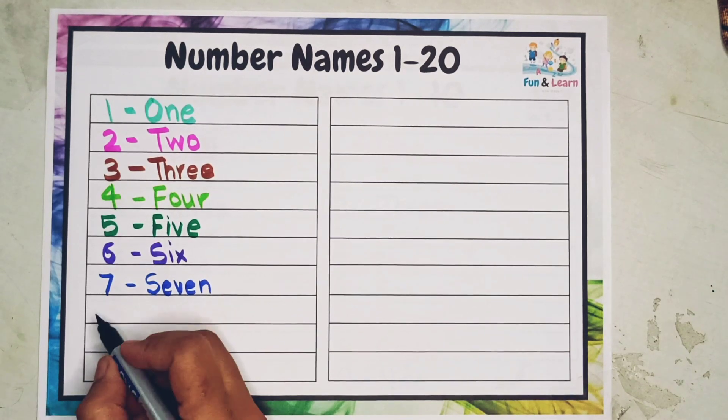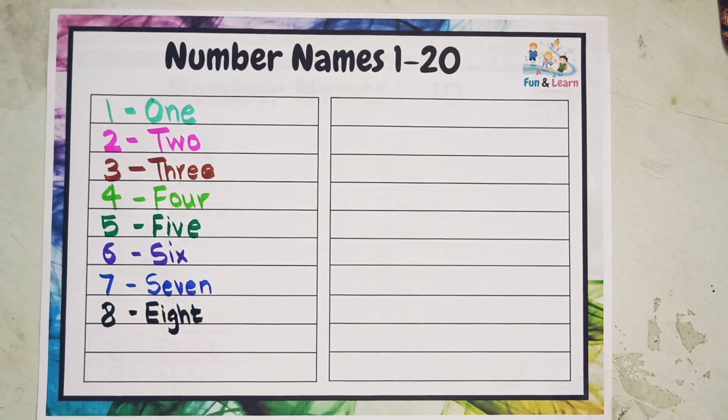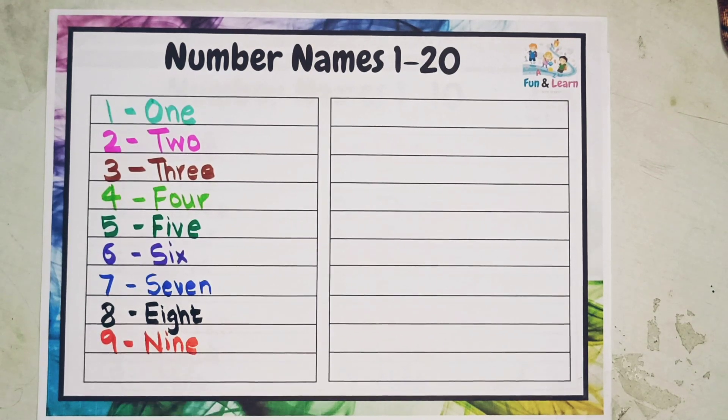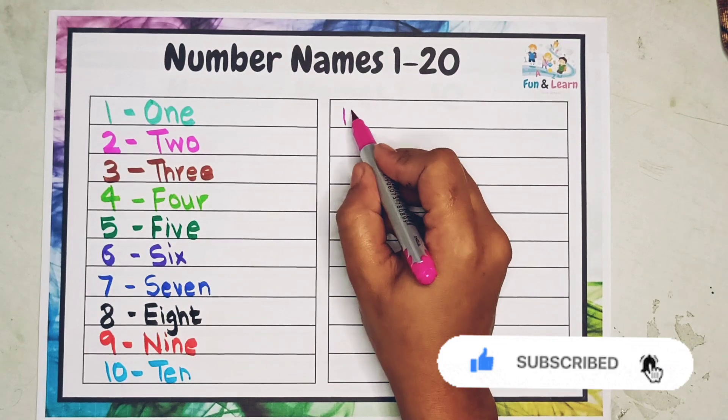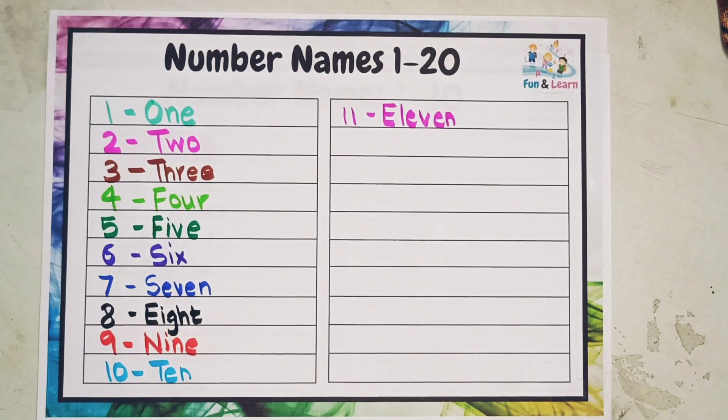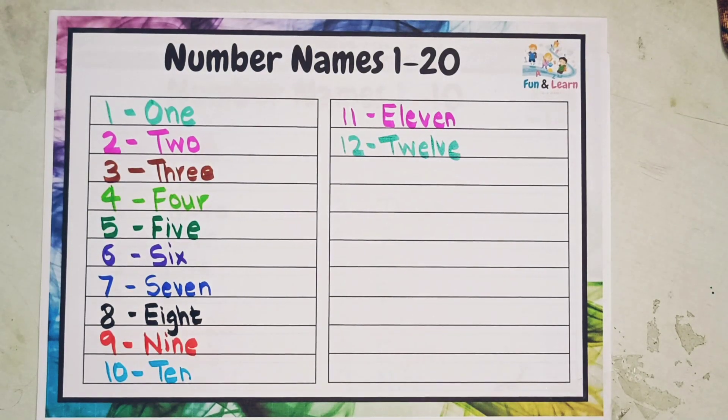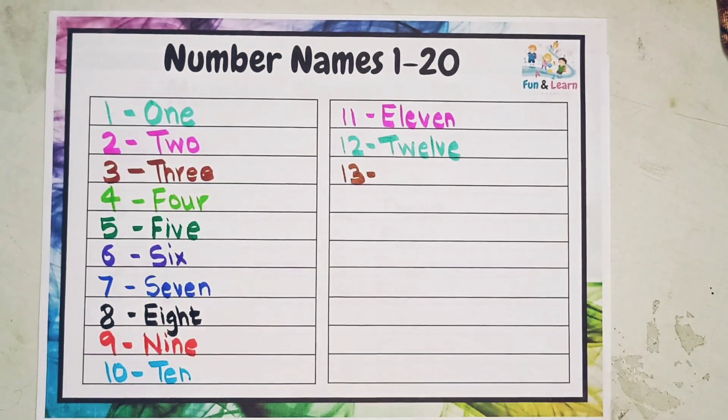8: E-I-G-H-T, eight. E-I-G-H-T, eight. 11: E-L-E-V-E-N, eleven. 12: T-W-E-L-V-E, twelve. T-W-E-L-V-E, twelve.